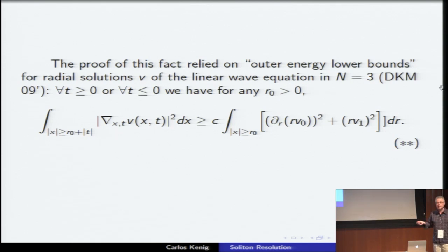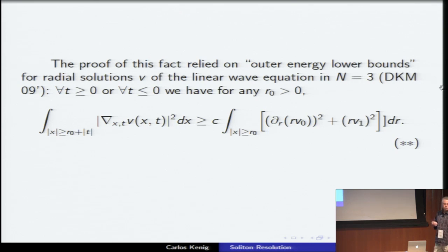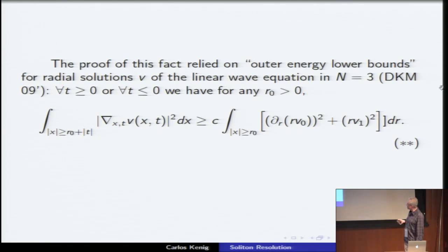The proof relied on outer energy lower bounds: a property of radial solutions of the linear wave equation in three dimensions, which could have been proved by D'Alembert — it's that elementary. It tells you that if you have a solution of the linear wave equation, for all t positive or all t negative, for any r₀ > 0, there is always a channel of energy provided a certain quantity is non-zero. That quantity is basically the energy norm except the r is inside the d/dr instead of outside — and this is precisely what kills W. The proof is truly elementary — one page and completely explicit.